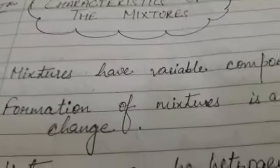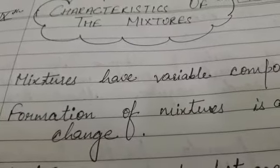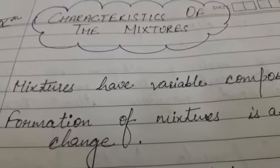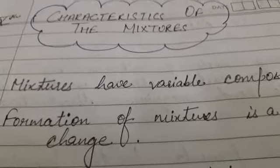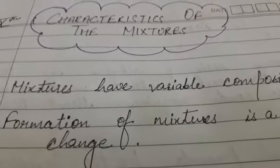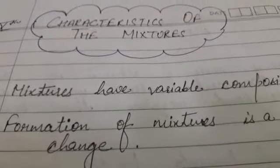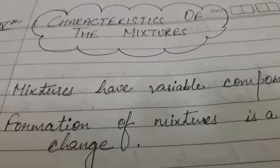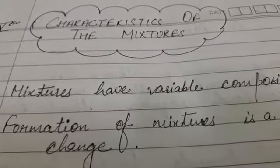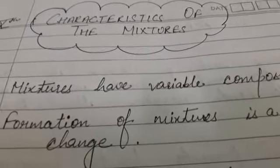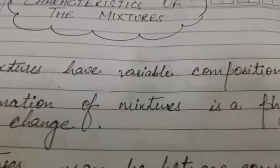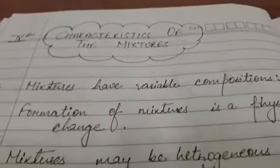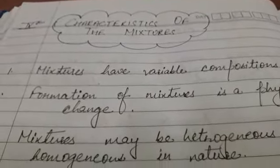For example, if we mix some spices into a vegetable dish, we can still recognize the taste of each individual spice. This means that the formation of a mixture is a physical change — the components added retain their properties and those properties do not get changed.